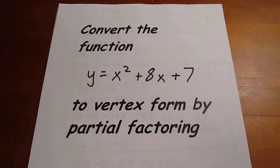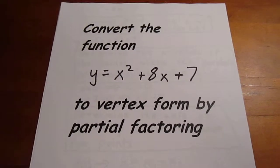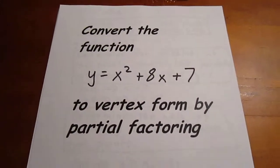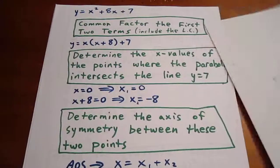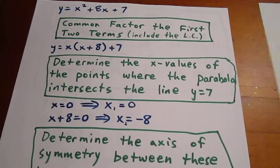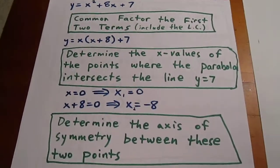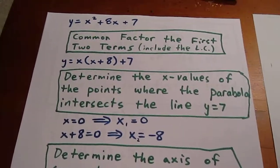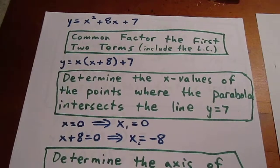We're going to convert the function y equals x squared plus 8x plus 7 to vertex form by partial factor. The first step is to common factor out the first two terms and we include the leading coefficient in that. So we have x times x plus 8 plus 7.